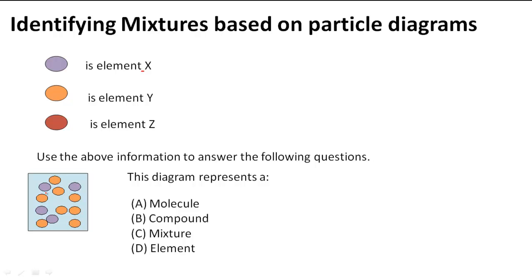When looking at this diagram we're going to identify the things that we see first. I see element X here, so I'm going to mark this as element X, and I see element Y here, so I'm going to mark this as element Y.